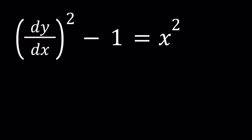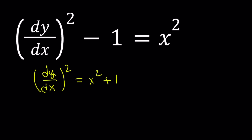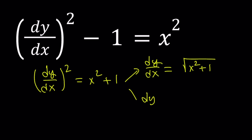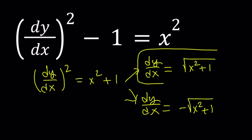Let's go ahead and add 1 to both sides first. At this point, we can go ahead and square root both sides, but that's going to give us two different results. So dy/dx is either the square root of x² + 1, or dy/dx can be the negative of square root of x² + 1. We're going to solve the first one and then just negate the result because that's fairly easy to do.